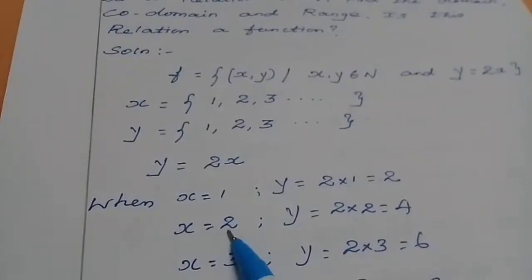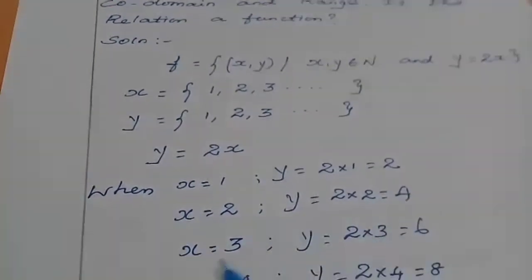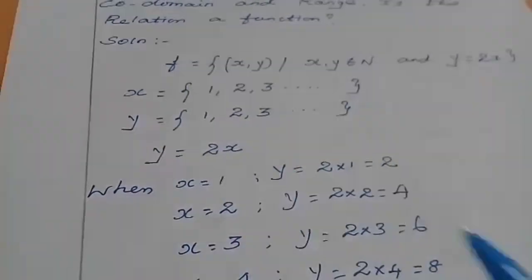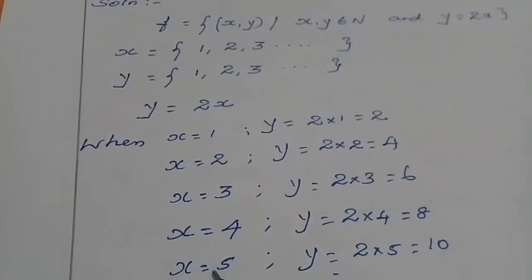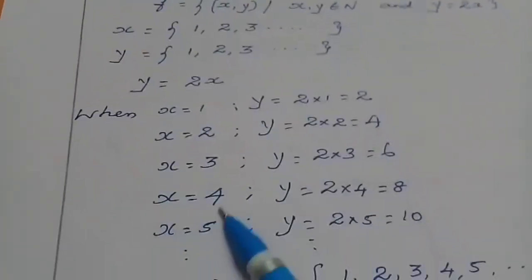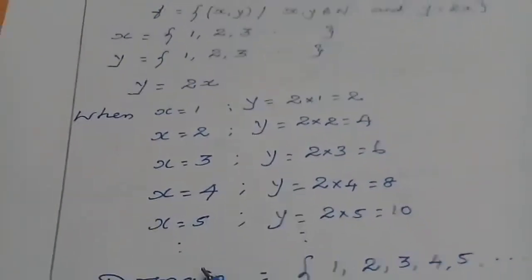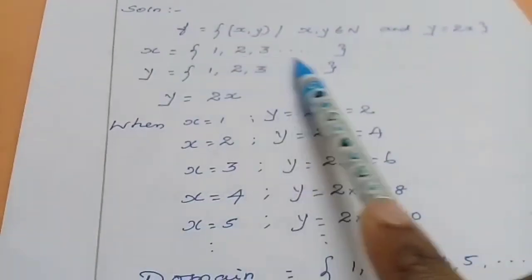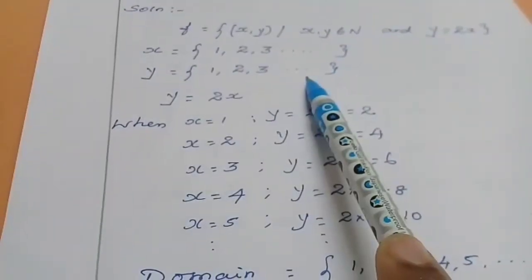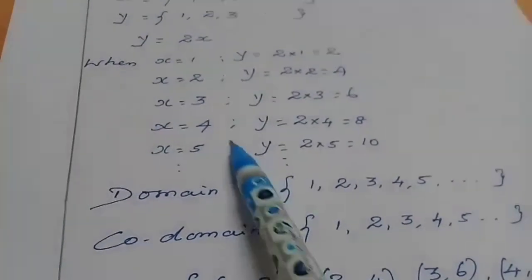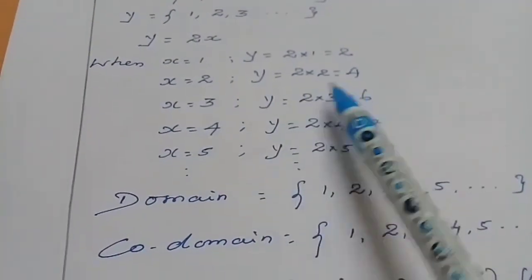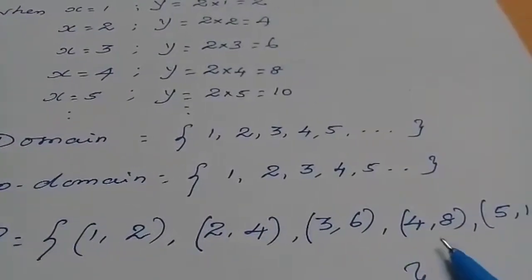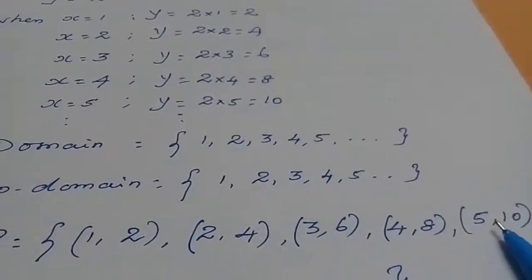When x = 2, y = 2×2 = 4. When x = 3, y = 2×3 = 6. When x = 4, y = 8. When x = 5, y = 10. The domain value is x, the codomain value is y. Writing the relation as ordered pairs: {(1,2), (2,4), (3,6), (4,8), (5,10)}.